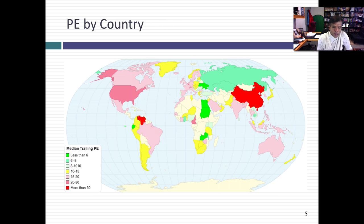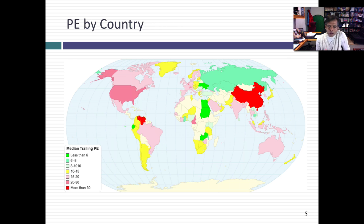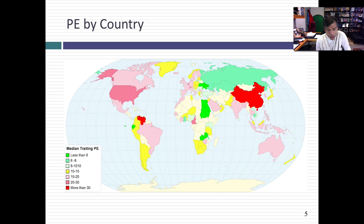Taking a closer look by country, I've mapped out the median PE ratio for pretty much every country with traded companies. You'll start to notice a pattern that plays out with every multiple: the cheapest countries in the world right now are in Africa and Eastern Europe — cheap for a reason, as they're risky countries. The most expensive are the US and China. Argentina also appears expensive, possibly because it's coming out of a deep economic fog, which might explain the high PE ratios.